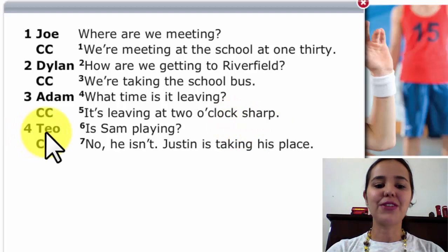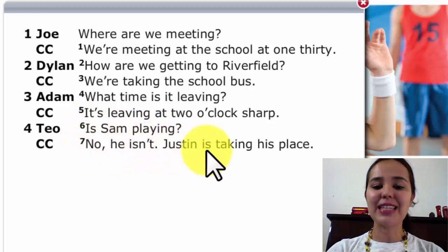Dialogue number 4. Tio is talking to coach Carson. Number 6. Is Sam playing? Number 7. No, he isn't. Justin is taking his place.